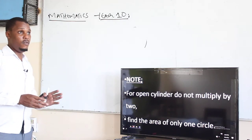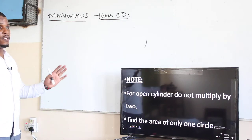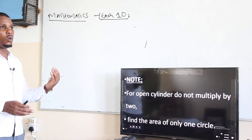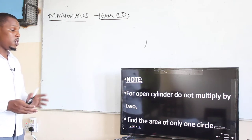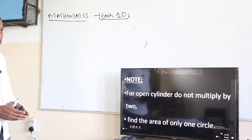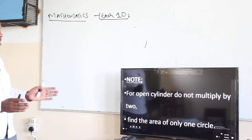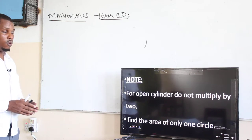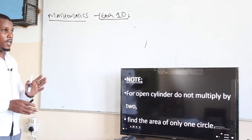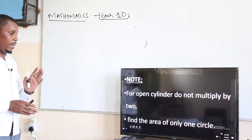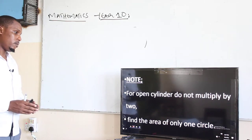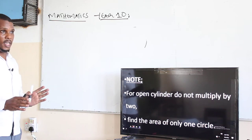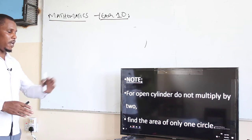But again, if the cylinder is open on both ends, don't include the first part — just only find the area of the curved surface, which is given by 2πl. That is really this order — you need this like a pipe.